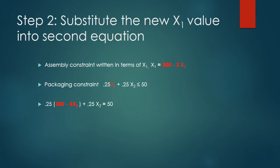All right, so step 2 is substitute into the other equation. So we have our x1, which is 300 minus 2x2, and we have the packaging constraint. So we take the 300 minus 2x2 and substitute it for x1 in the packaging constraint. You can see below.